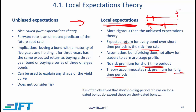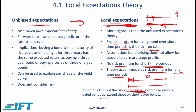Even though the local expectations theory is more rigorous than the unbiased expectations theory, it does have an issue. It has often been observed that short holding period returns on long-dated bonds do exceed those on short-dated bonds. In other words, if we look at data over the last several years, the return on a 20-year bond over a short time period tends to exceed the return on a 1-year bond over a similar holding period. So the observed data violates what this particular theory is saying.